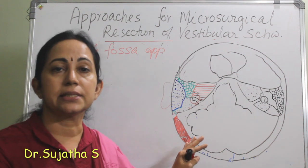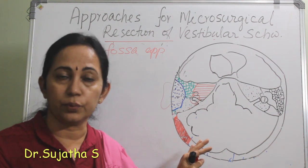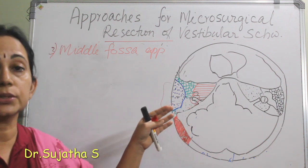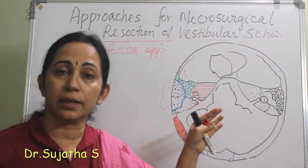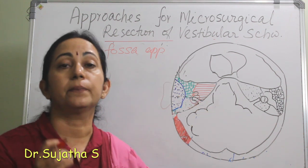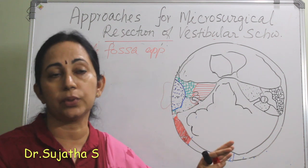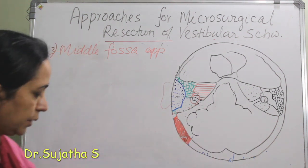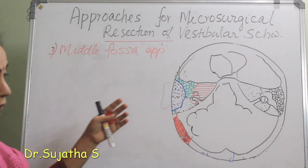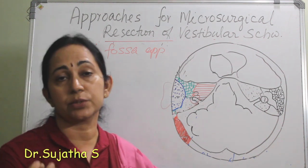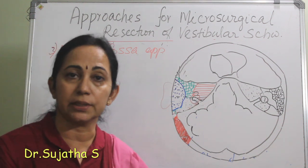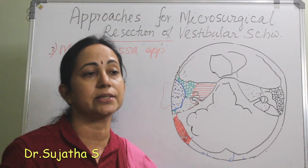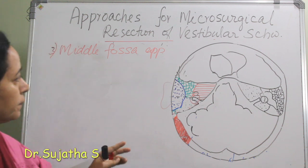This is the only surgical approach for vestibular schwannoma for reaching into the internal acoustic canal with the preservation of hearing. There is no damage to the hearing in this case. The indication is small tumours of the internal acoustic canal with serviceable hearing — that is the indication for the middle fossa approach.